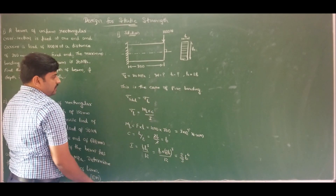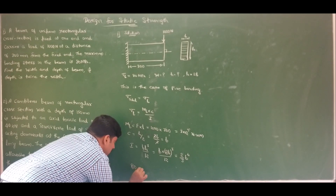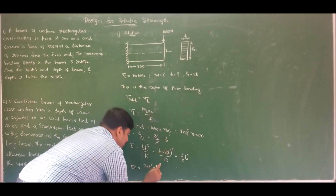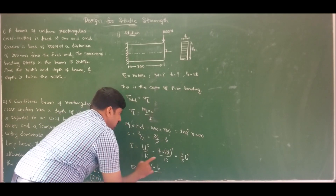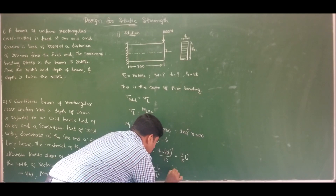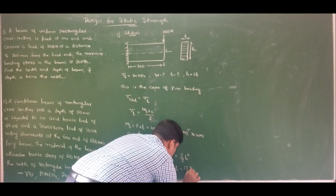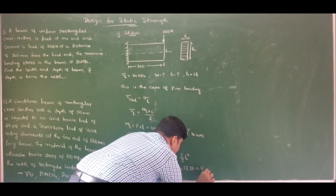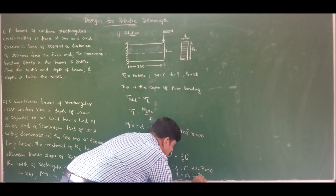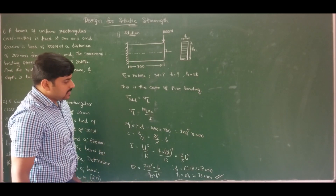Now substituting all values: σ_b = 80 MPa = Mb·c/I = (3×10⁵ × B)/(2B⁴/3). Solving this equation gives B ≈ 17.78 mm, which is approximated as 18 mm. Therefore H = 2B = 2 × 18 = 36 mm. The width of the beam is 18 mm and the depth is 36 mm.